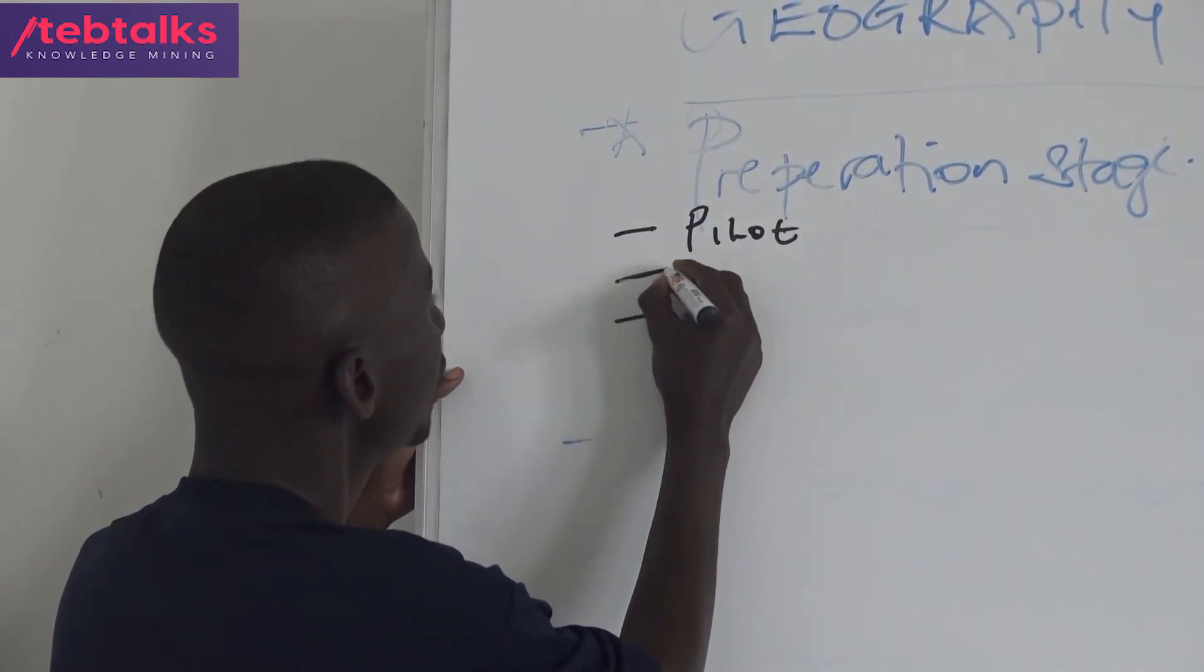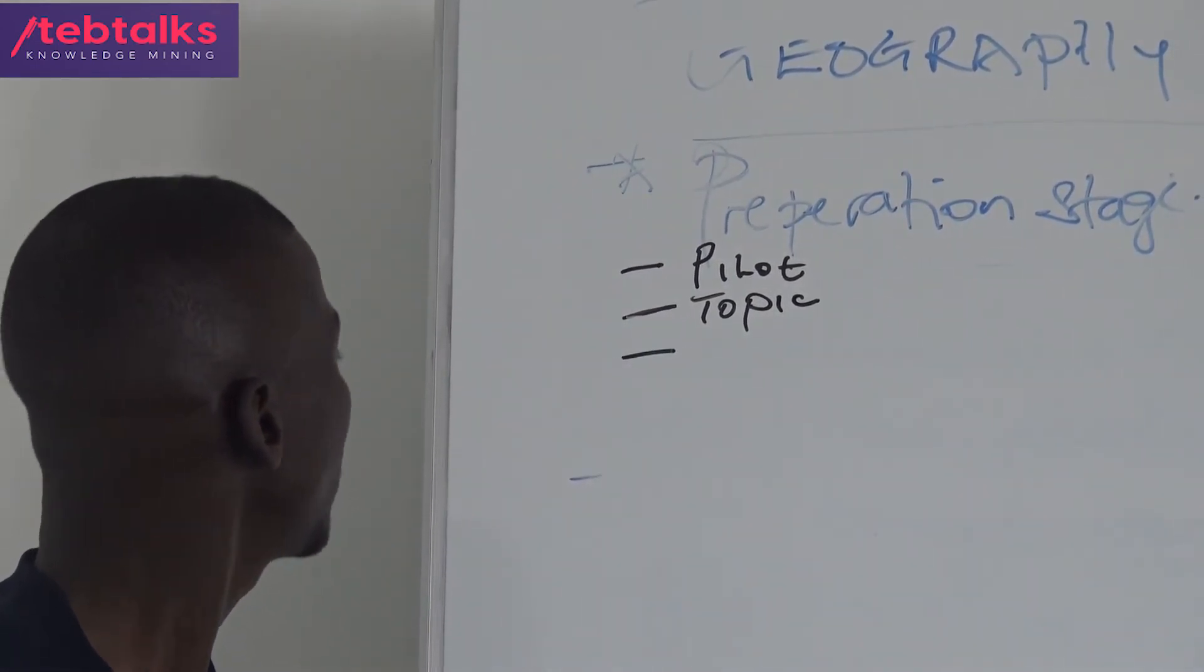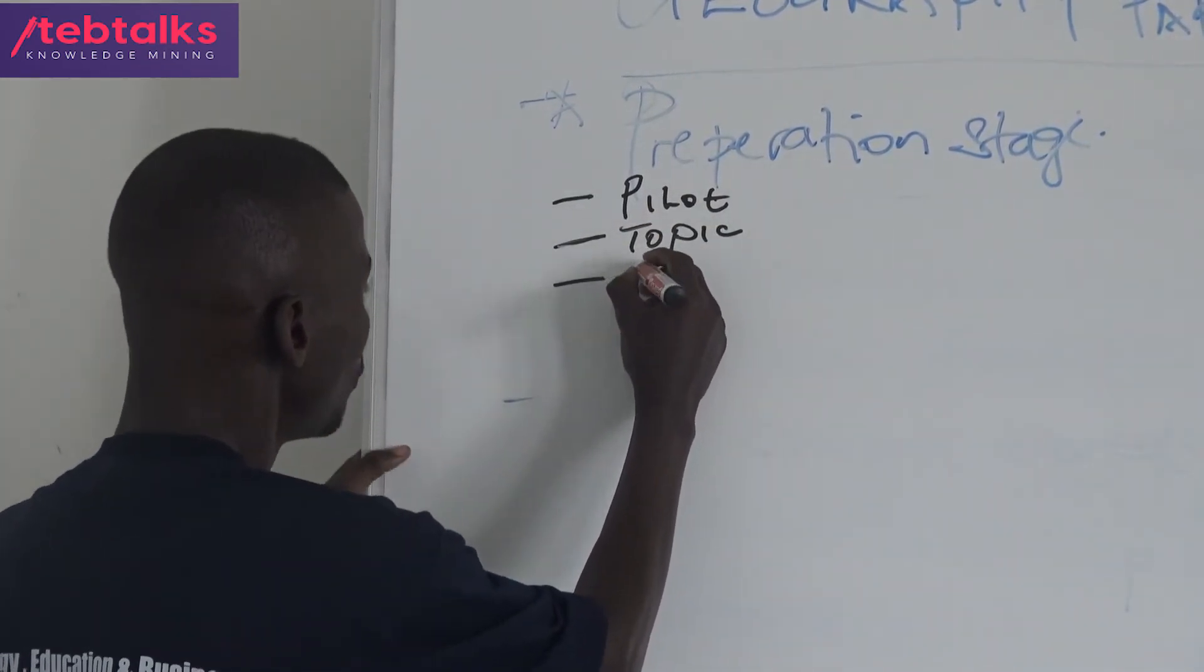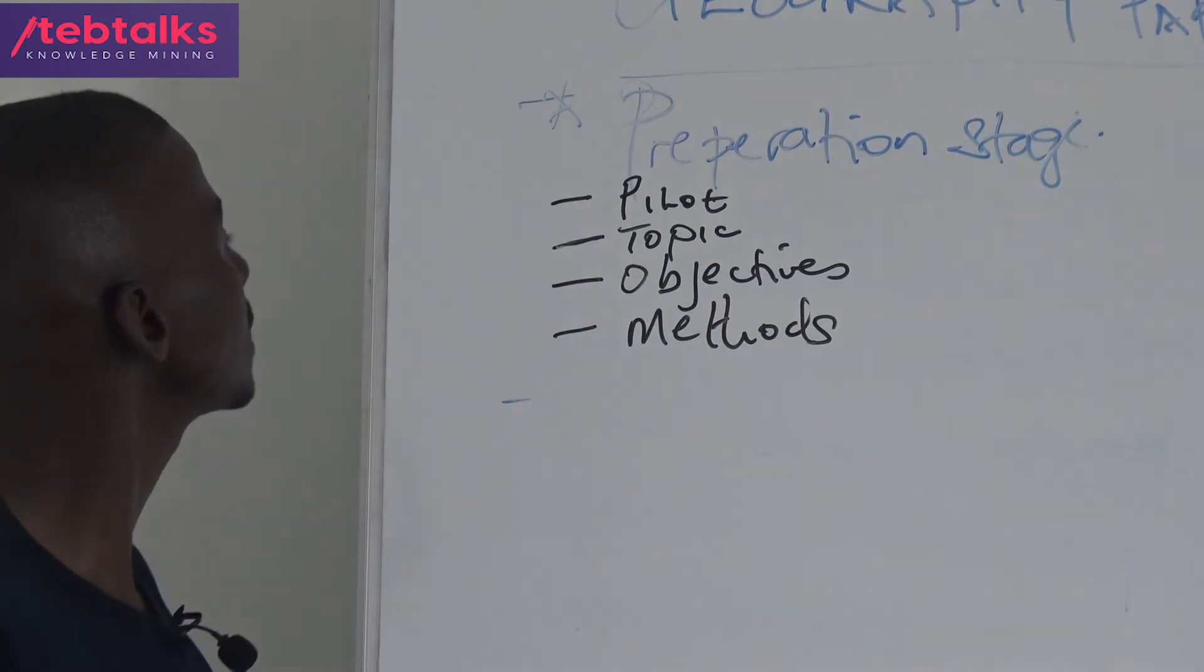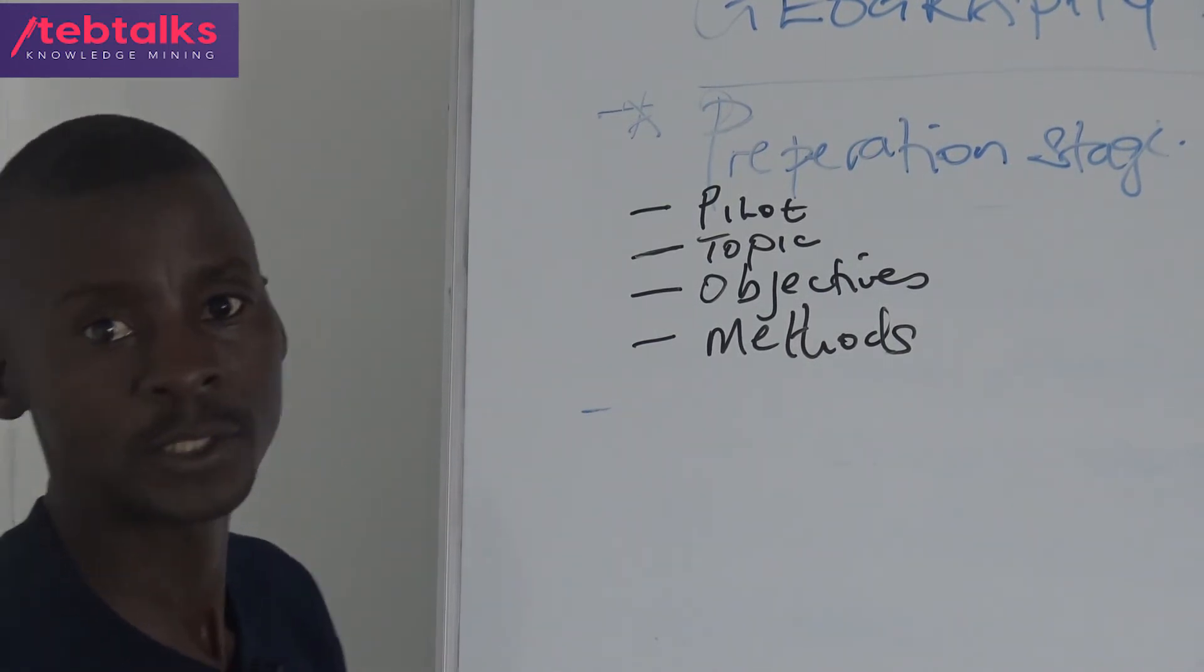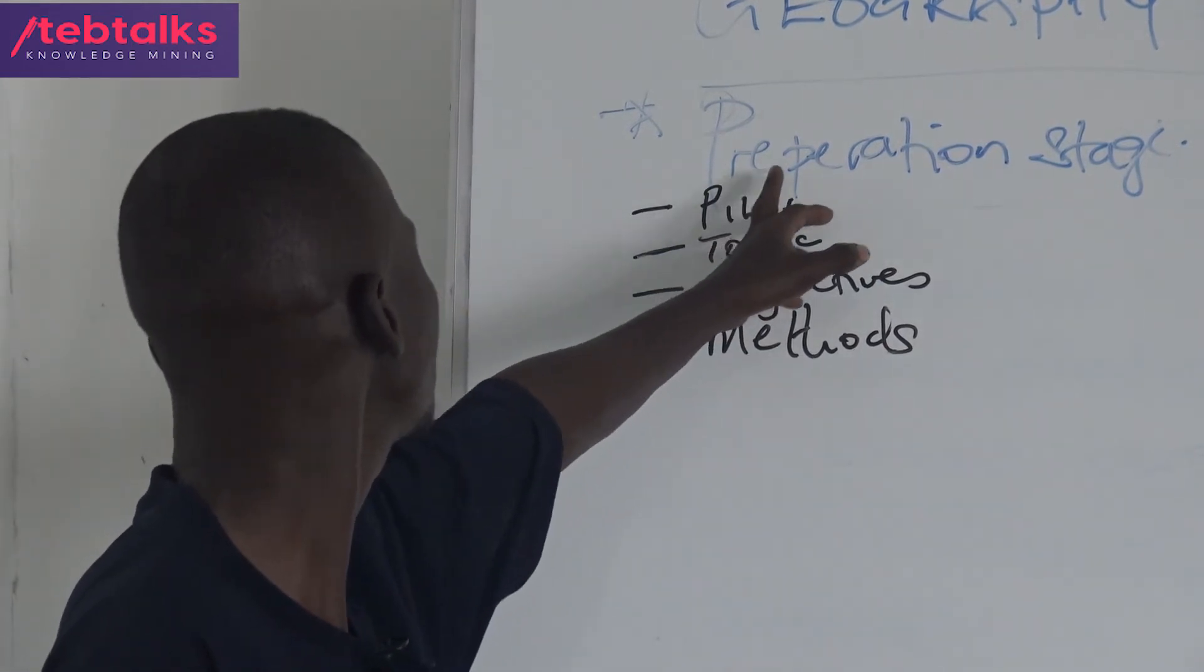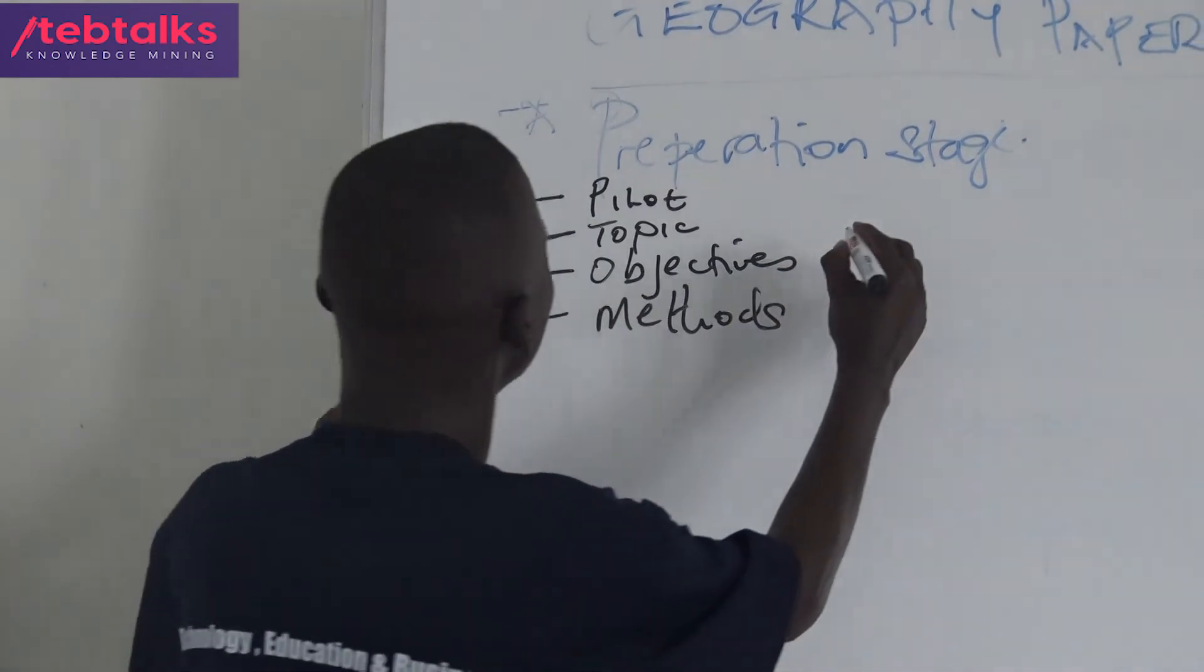The second activity in the preparation stage is the topic. The topic has a number of elements as we will see. Then we have objectives, and lastly, the methods. Those are the key things in the preparation stage. These are the pre-field preparations: the pilot stage, the topic, the objectives, and methods of data collection.